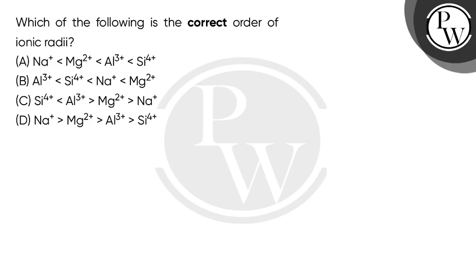Students, let's see this question. The question says which of the following is the correct order of ionic radii? Four options here. You have to tell us what is the correct order of ionic radii. Here I am looking at Na positive, Mg2 positive in all these options.